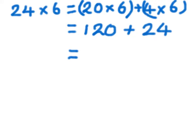Add those two together giving us 144. So, that's partitioning to multiply.